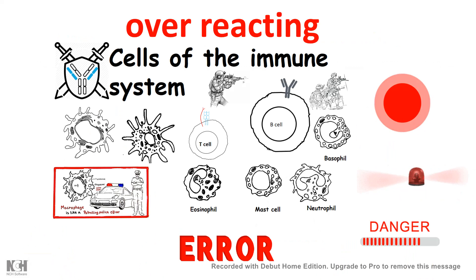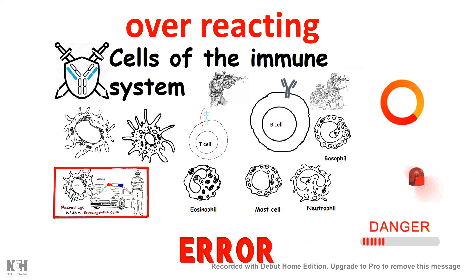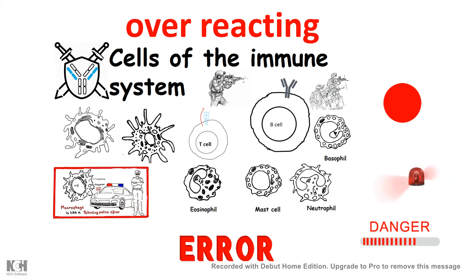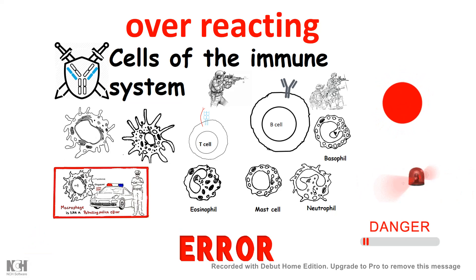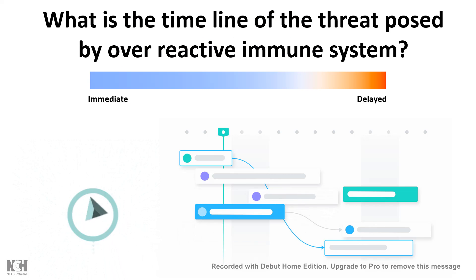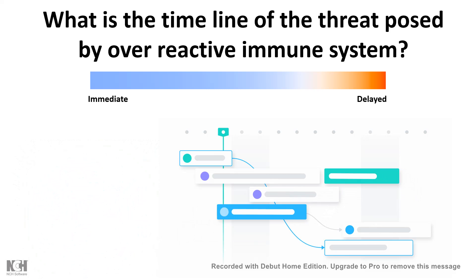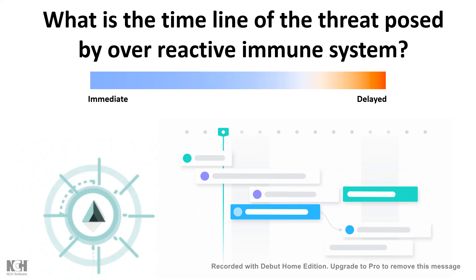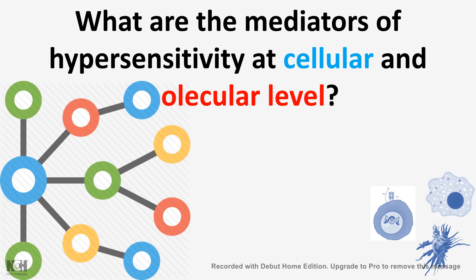When the cells are autoreactive and when the cells are oversensitive towards pathogens or antigens, that could cause several danger signals to the body. This threat posed to the body could have different timelines — some consequences could be immediate, some could be delayed. We should also ask what are the mediators of hypersensitivity at the level of cell or molecules.